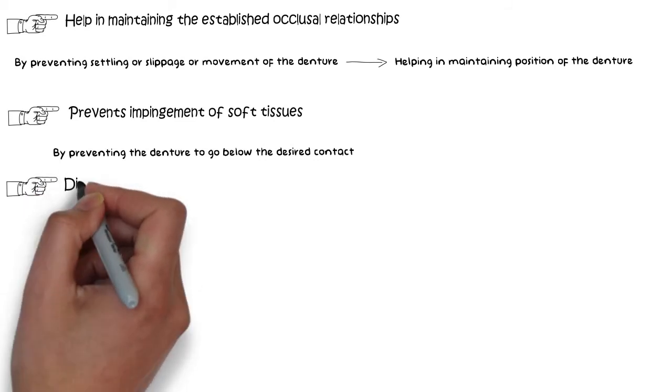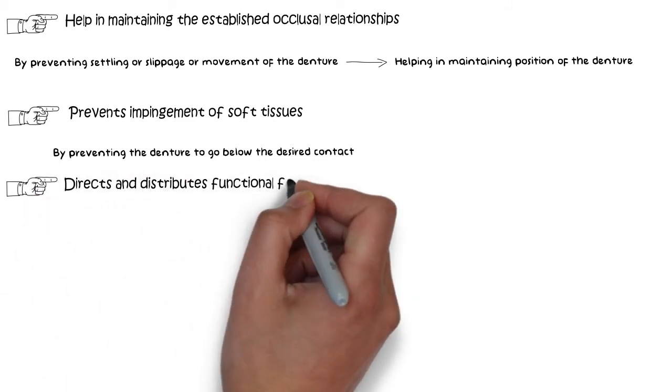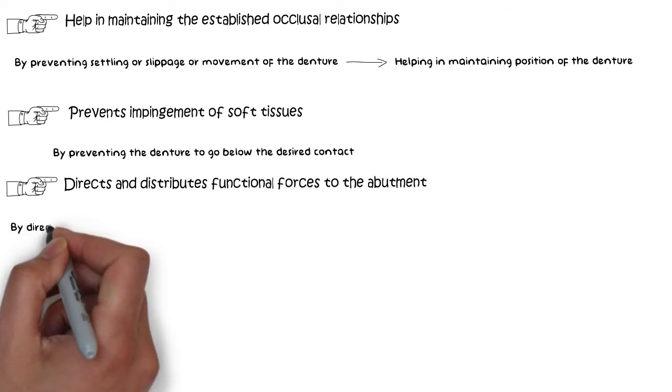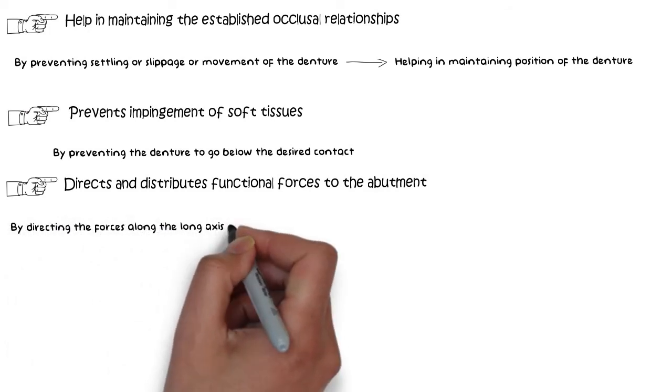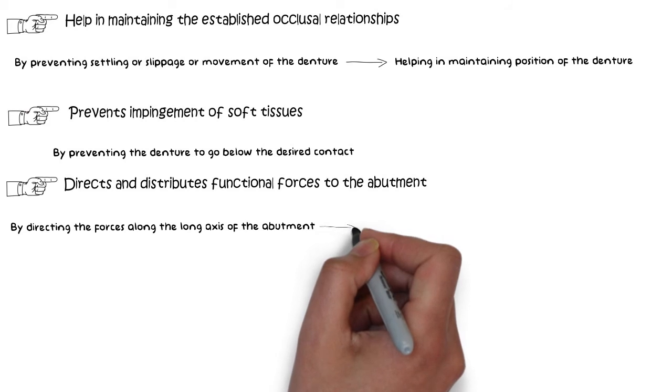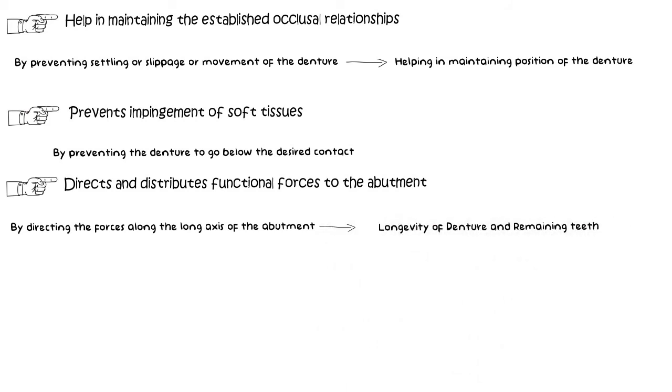And finally, rest also directs and distributes functional loads to the abutment by effectively distributing functional forces along the long axis of the tooth, and thereby preserving the longevity of the remaining teeth and the denture itself.